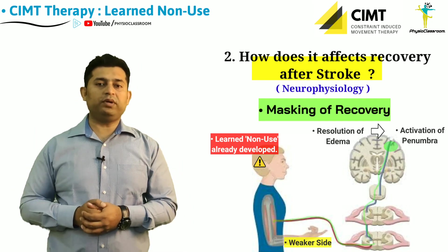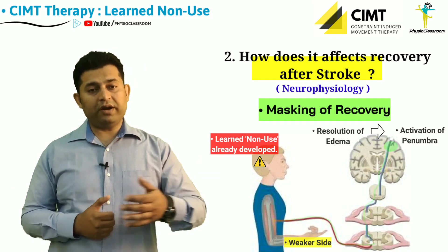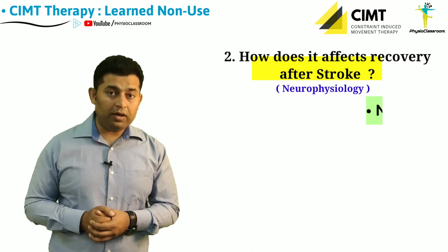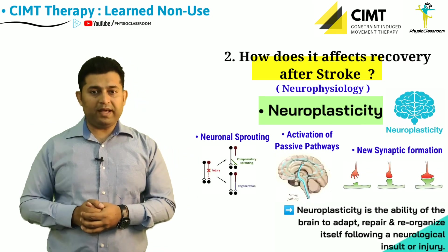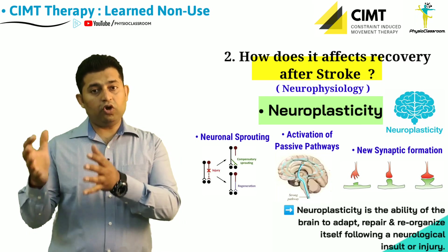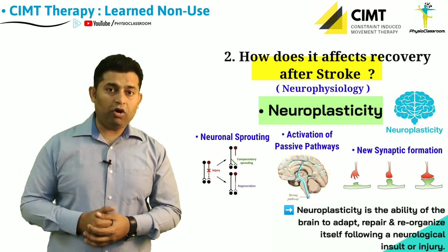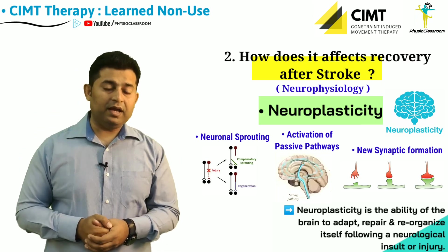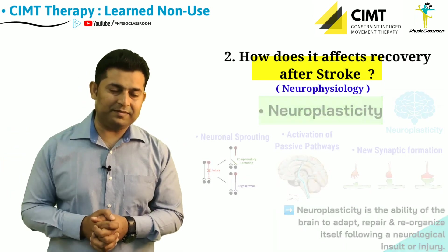That mechanism is neural plasticity. Neural plasticity takes place through various mechanisms such as neuronal sprouting, activation of redundant or passive pathways, and formation of new synapses.